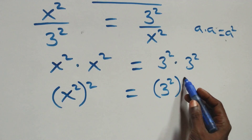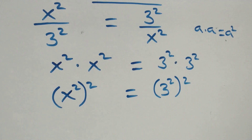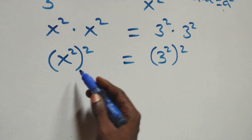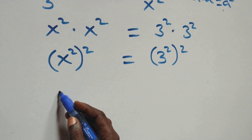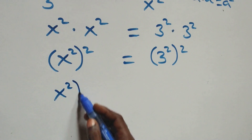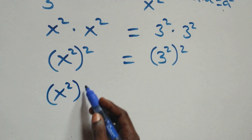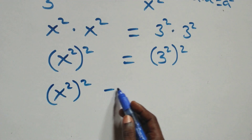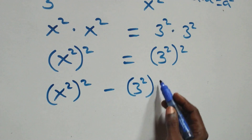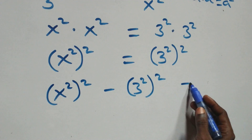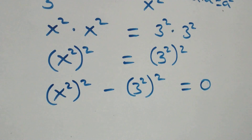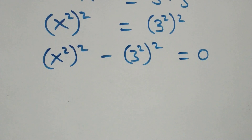From here, we take the right-hand side to the left-hand side. This becomes x squared squared minus three squared squared equals zero.